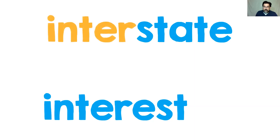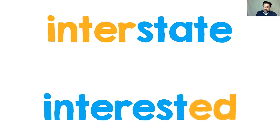If you put the prefix 'inter' in front of 'state,' the word 'interstate' is a big highway that runs between states. That's what 'inter' means when you put it in front of a word — it means between or among. And 'interested': you put the suffix E-D on the end of 'interest,' and you've got 'interested,' which you usually use as an adjective — and we all know what 'interested' means.